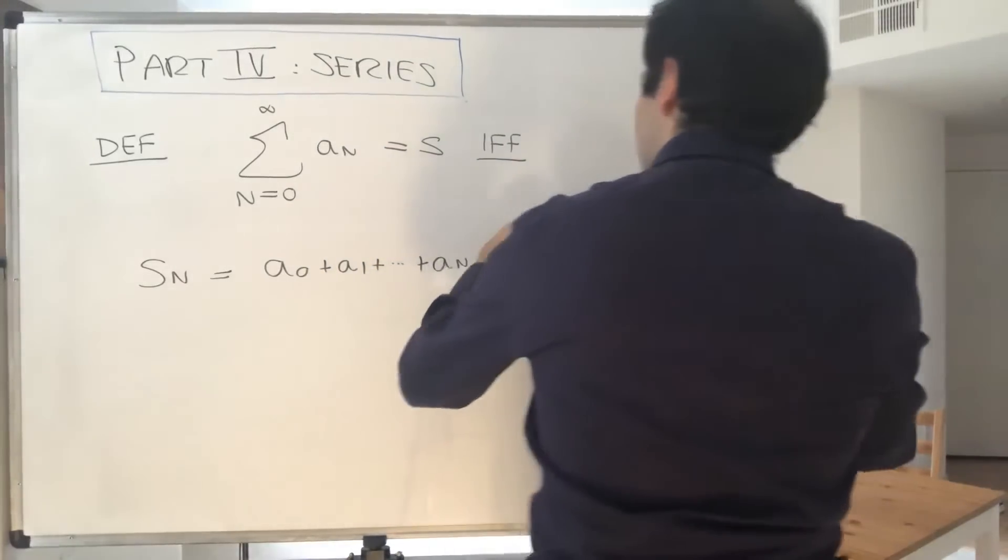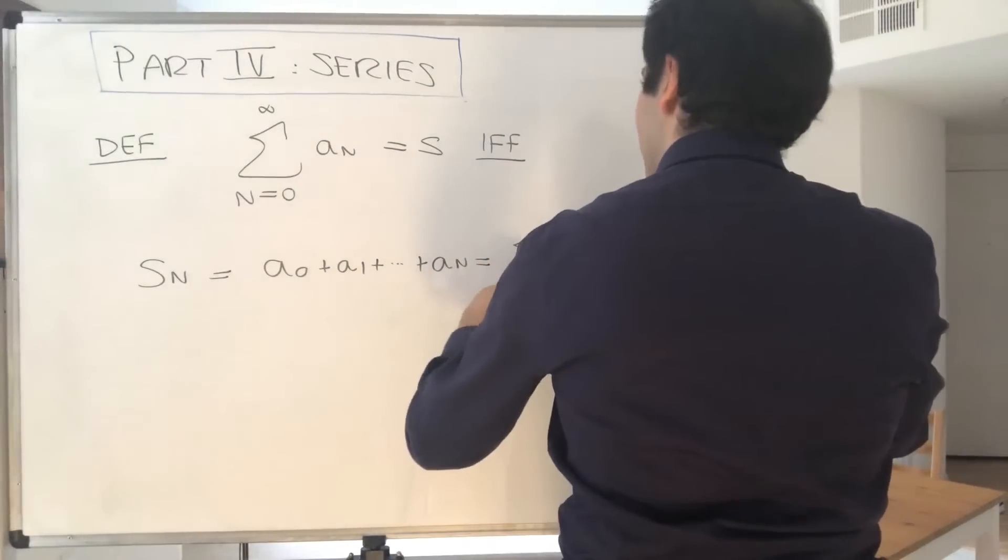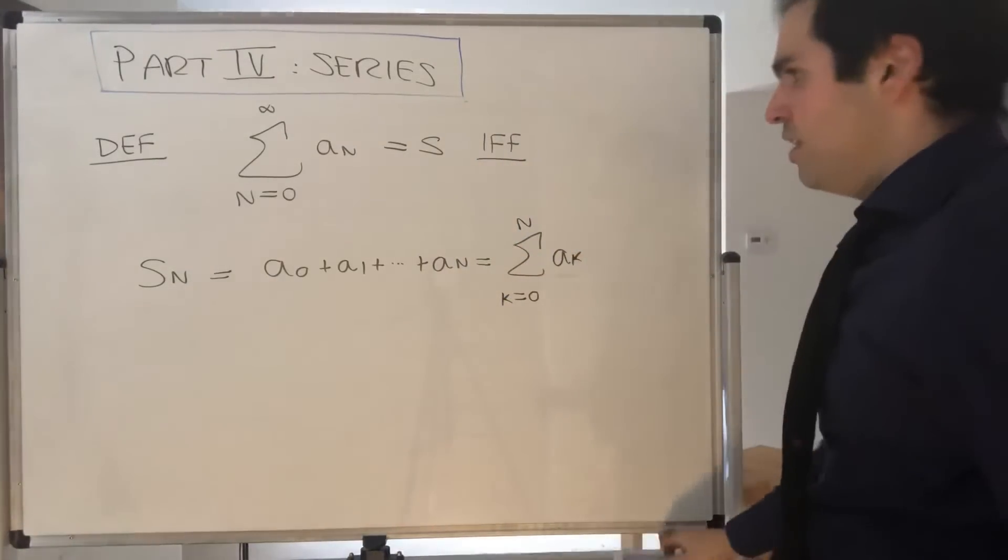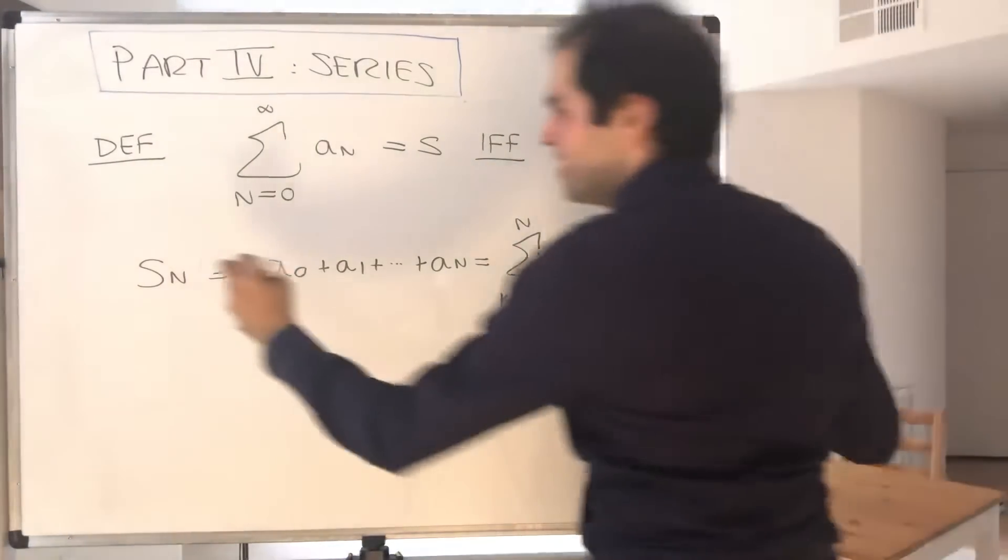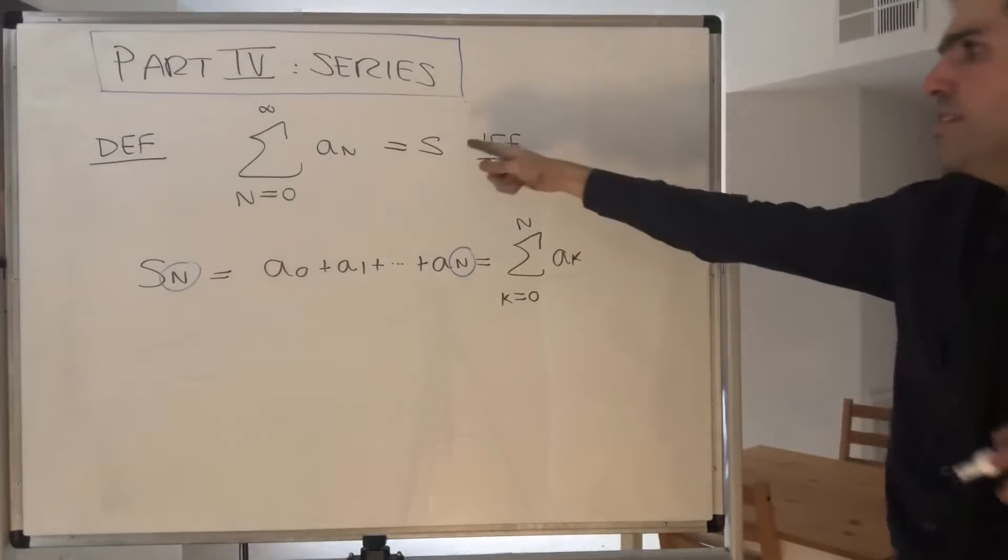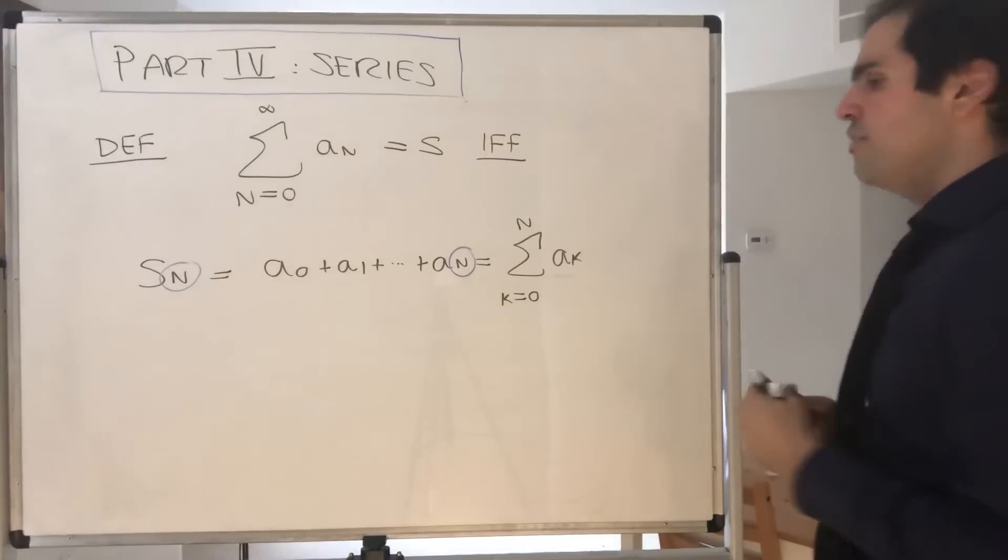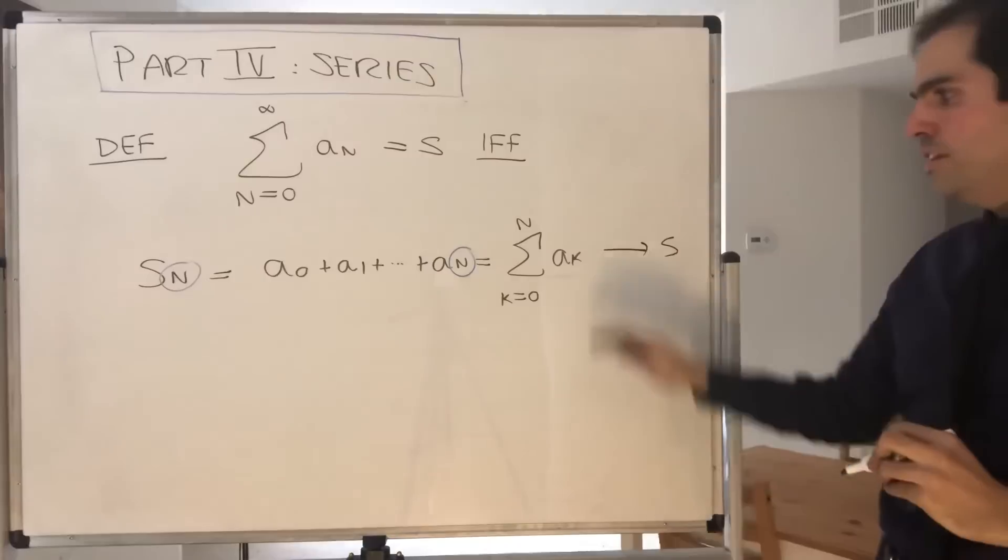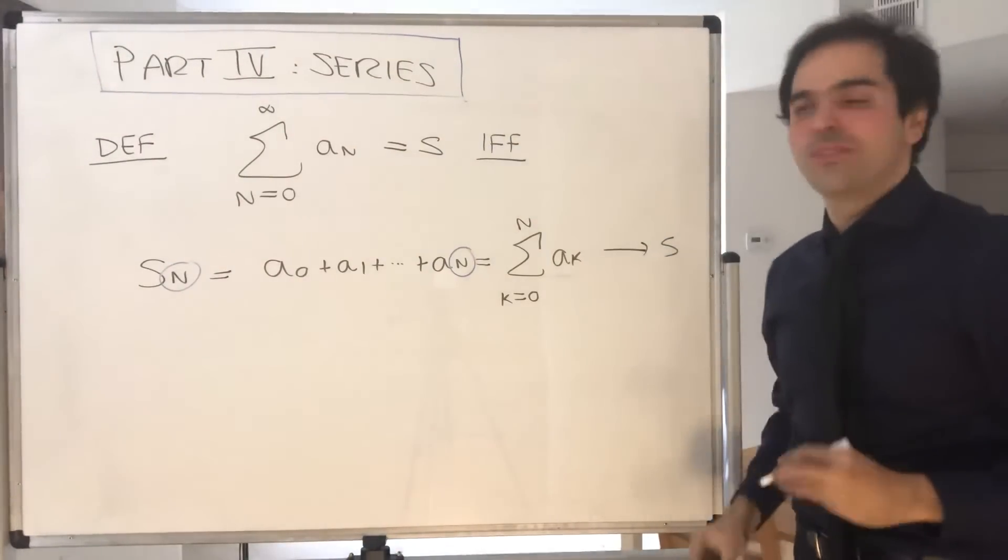Now, this is a sequence depending on n. And the point is, this converges if and only if the sequence converges to S. And again, this we know how to handle; this a priori, we don't.